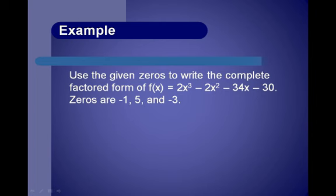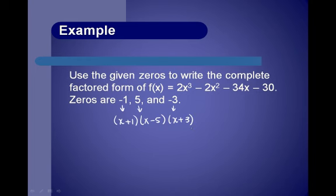Use the given zeros to write the complete factored form of 2x to the third minus 2x squared minus 34x minus 30, given that the zeros are negative 1, 5, and negative 3. If the zero is negative 1, the factor is x plus 1. If the zero is 5, the factor is x minus 5. And if the zero is negative 3, the factor is x plus 3.